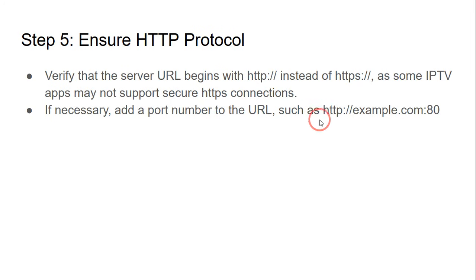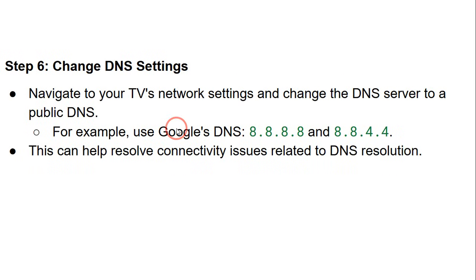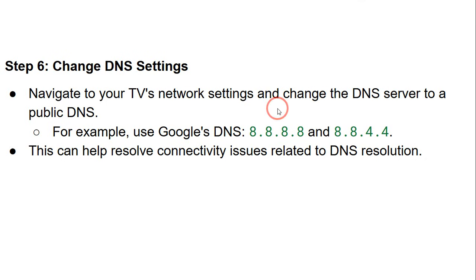Now move on to step number six. If none of the previous five steps are working, you need to change the DNS settings. Navigate to your TV's network settings and change the DNS server to a public DNS — for example, use Google DNS. This can help resolve connectivity issues related to DNS resolution.